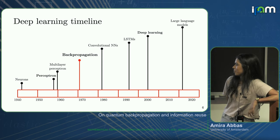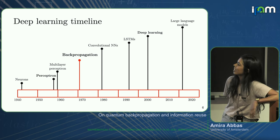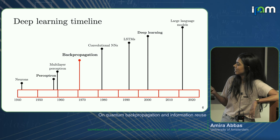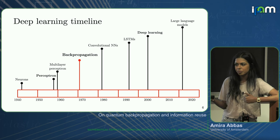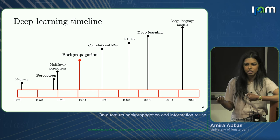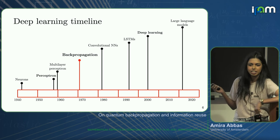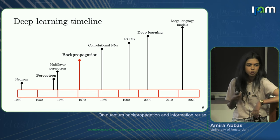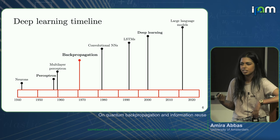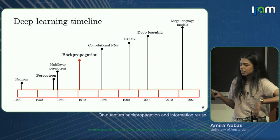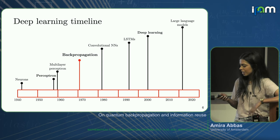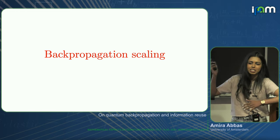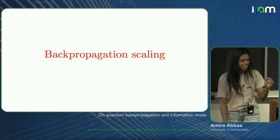I drew this timeline of deep learning to highlight that we knew about perceptrons and neural networks for a while. It really wasn't until we could optimize them — plus having the compute power — that we got to the scales we are at today in classical machine learning, on the order of trillions of parameters. The efficiency of back propagation is really quite important.